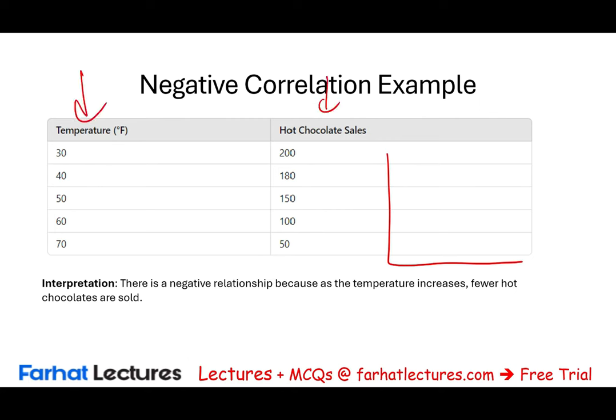Here's a multiple choice question from FarhatLectures.com: A company observes that as the number of competitors in their market increases, their market share decreases. What type of correlation is being described? As competitors go up, market share goes down. Is it positive, negative, no correlation, or perfect correlation? There is a correlation, so no correlation is out. It's not described as perfect. Since one goes up and the other goes down, this is a negative relationship — a negative correlation.